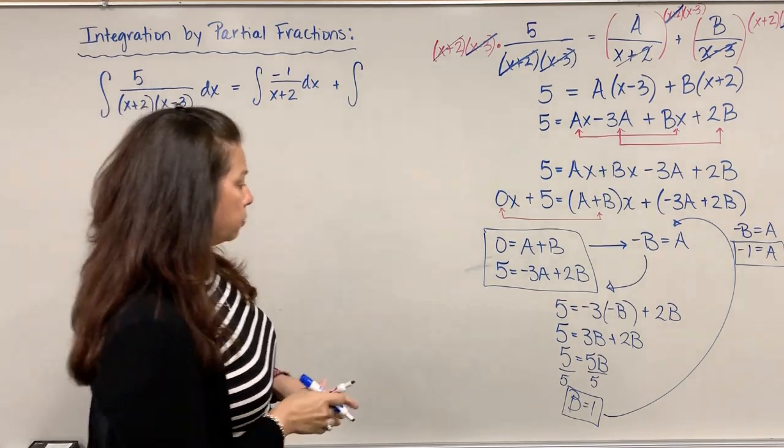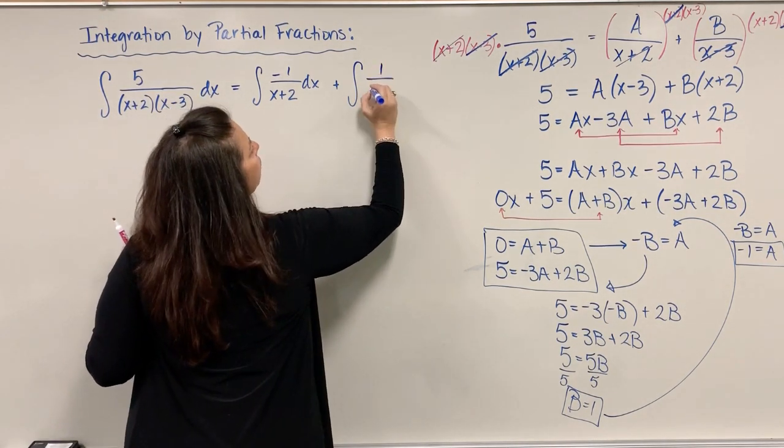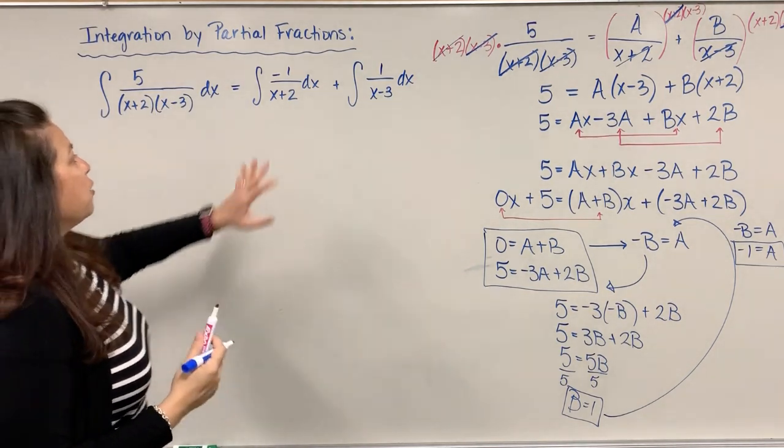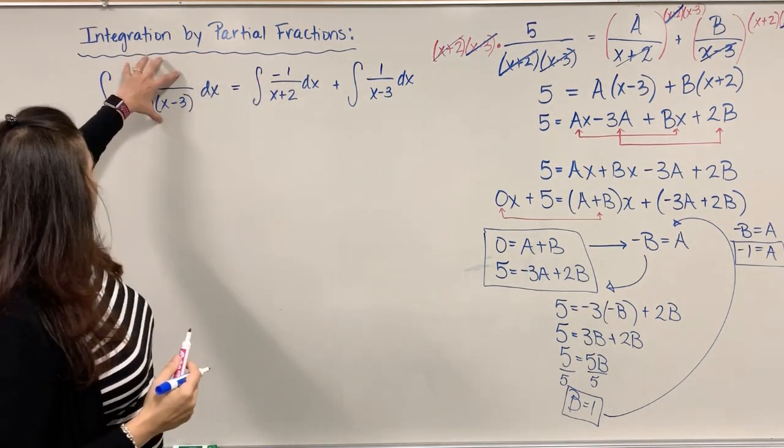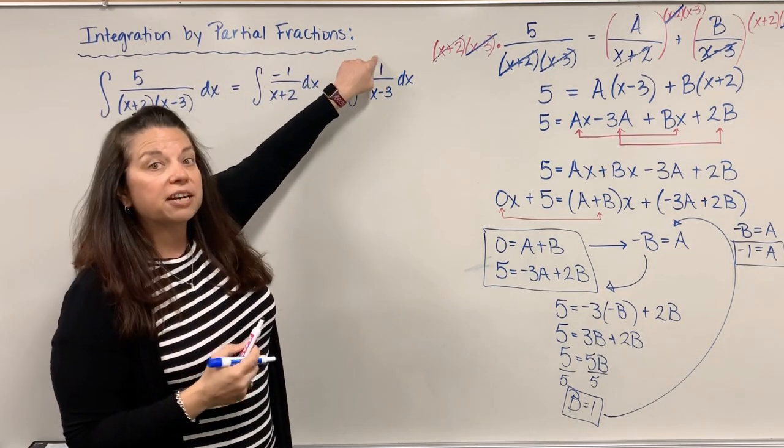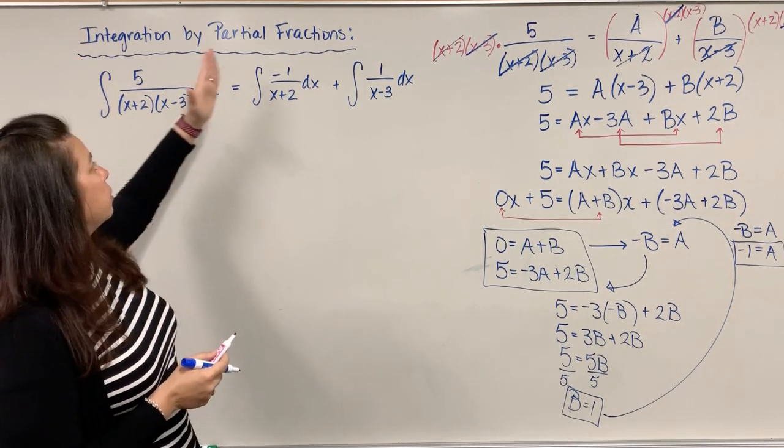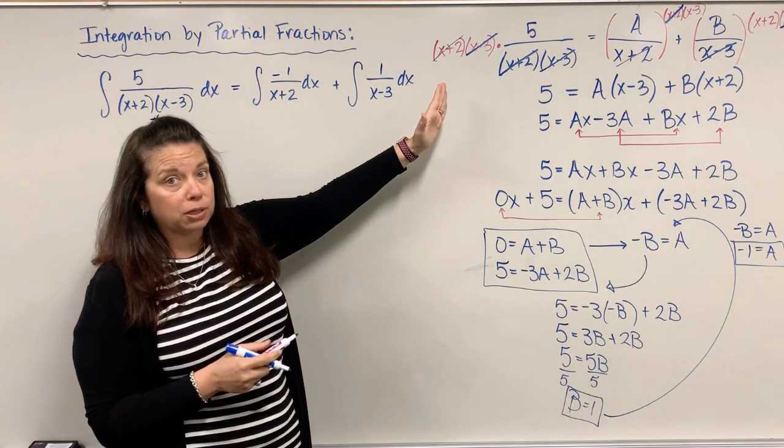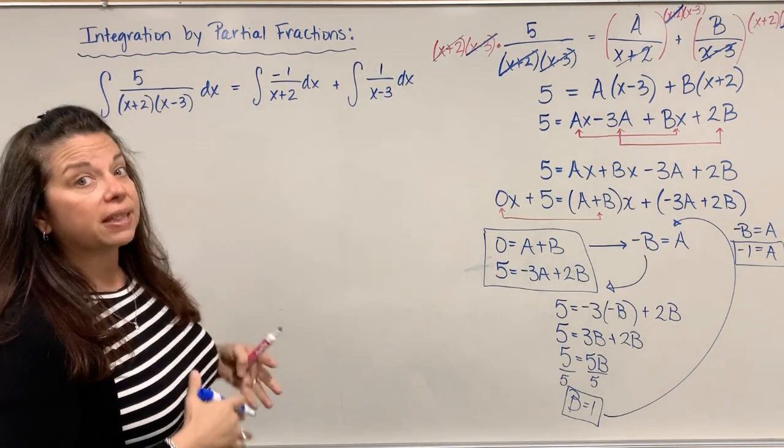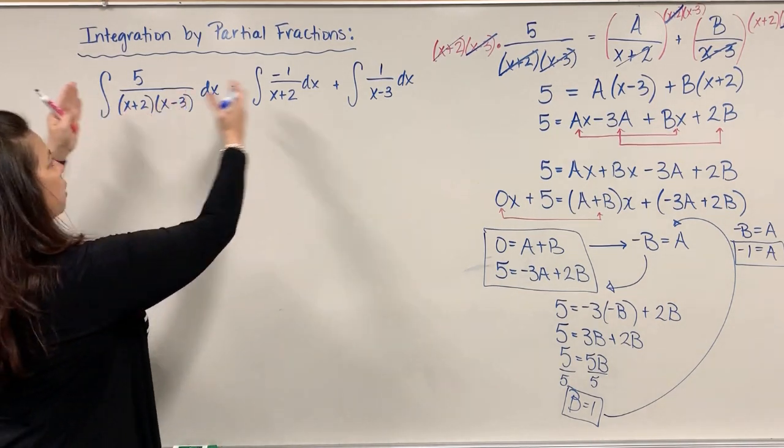We have the integral of, instead of A over x+2, we know A is -1. So this is -1 over x+2 dx. And I'll add to that the integral of the second fraction, B over x-3, but I know B is 1. So 1 over x-3 dx. I took my one integrand and now have two integrands with new numerators, and simultaneously broke the integral symbol into two separate integrals.